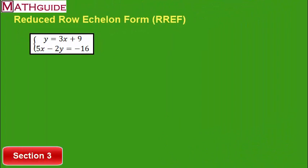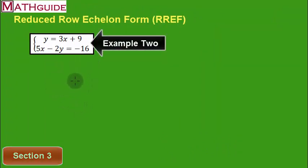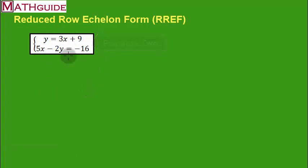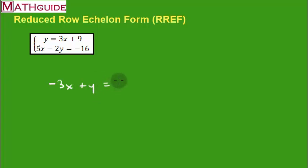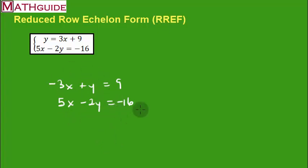Here's our second example, which is our third section. This set of equations is not in the nice form we need. The last equation is fine — X in the first column, Y in the second, a number alone. But for the first equation, I need to move the X over. So I subtract 3x from both sides, making it negative 3x plus y equals 9. That gives us: negative 3x + y = 9 and 5x − 2y = −16.